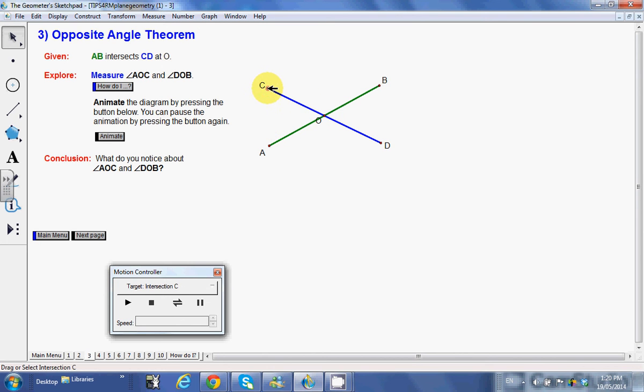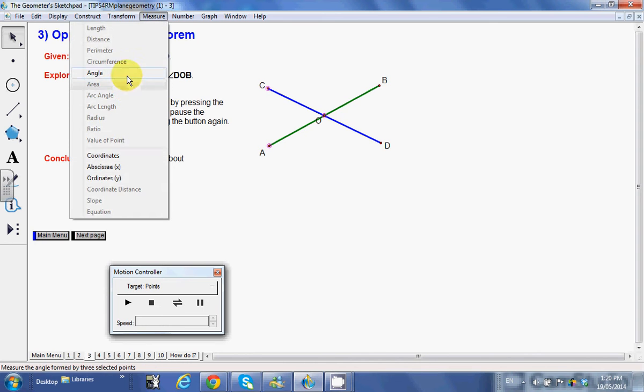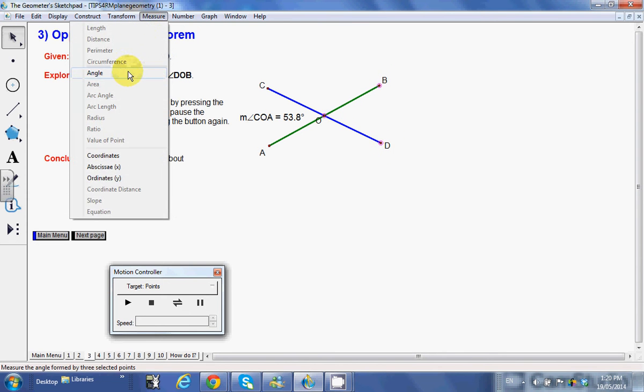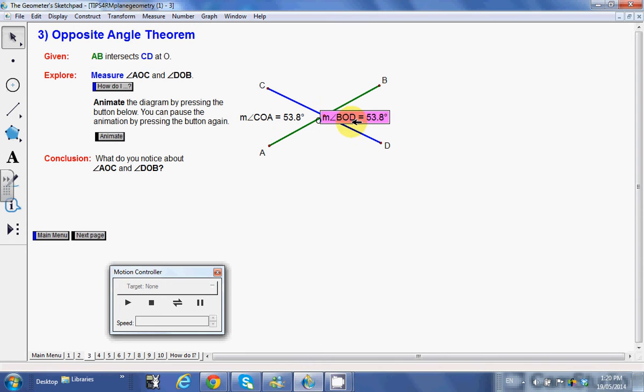Let's go ahead and see what actually happens. Click here on COA. Let me deselect again, COA, and again I could have also done AOC, would have been the same thing. So we're going to measure that angle. This guy here is 53.8. And again measure the same thing on this side, measure this angle, so COD and measure angle.